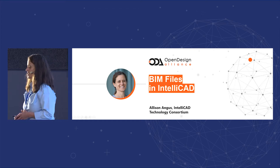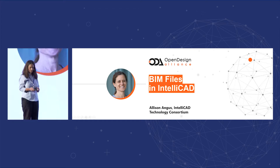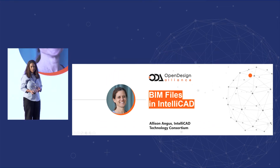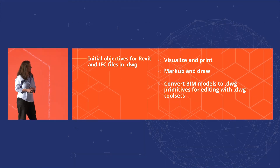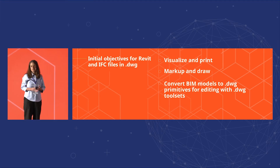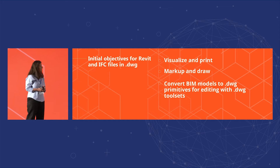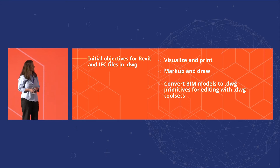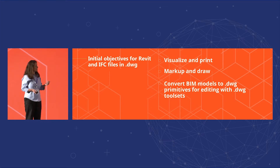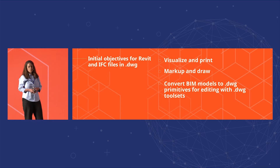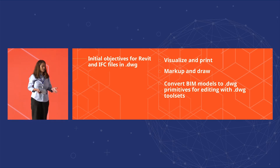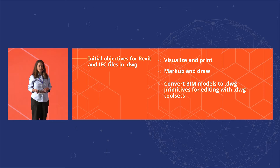ITC members use the IntelliCAD engine to build industry-specific vertical solutions. What I'd like to talk about today is the BIM-RV SDK from ODA and the IFC SDK specifically. Using these SDKs, we in IntelliCAD can not only visualize and print, but markup and draw on top of a BIM model and also convert BIM models to DWG primitives for editing within existing DWG tool sets that ITC members have.